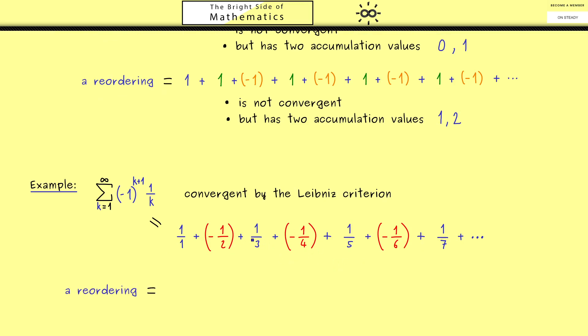Here we know we have a unique limit, just one accumulation value. The question is how can we reorder the whole thing to change the limit. I can tell you this is indeed possible.